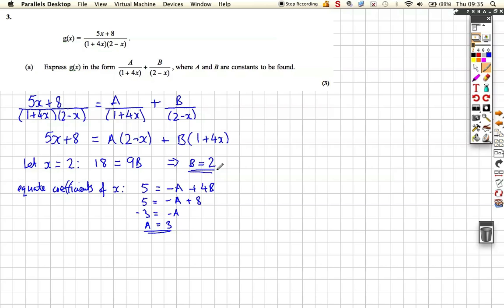So, we've found our two constants here. If we did want to rewrite it out again, we can rewrite the first term. (5x + 8)/[(1 + 4x)(2 - x)] is equal to 3/(1 + 4x) plus 2/(2 - x). So, we've found our constants a and b, so we've got our three marks here.